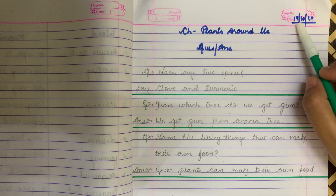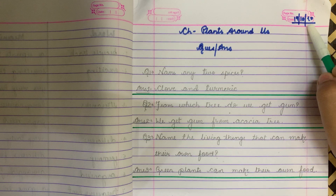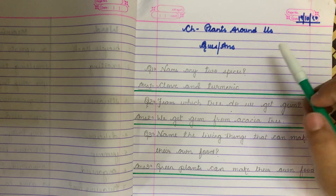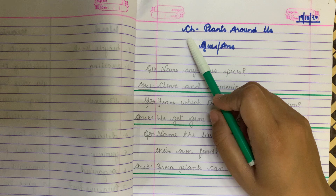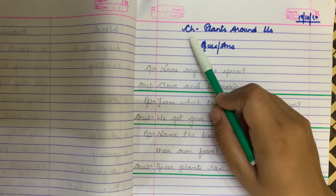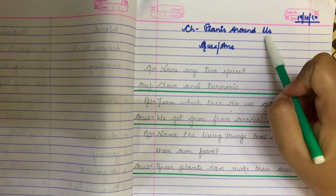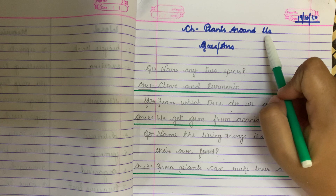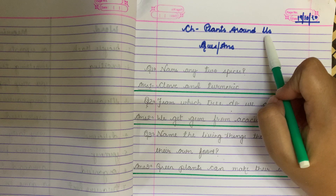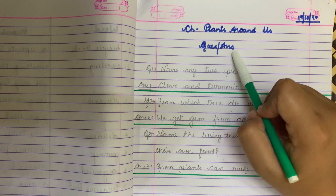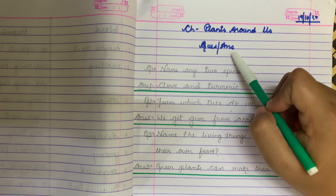Write down the date: 19 October 2020. Then write down the name of the chapter with your sketch pen — 'Plants Around Us'. Please use cursive handwriting, children. We are going to do question answers, so write down 'Question Answers'.